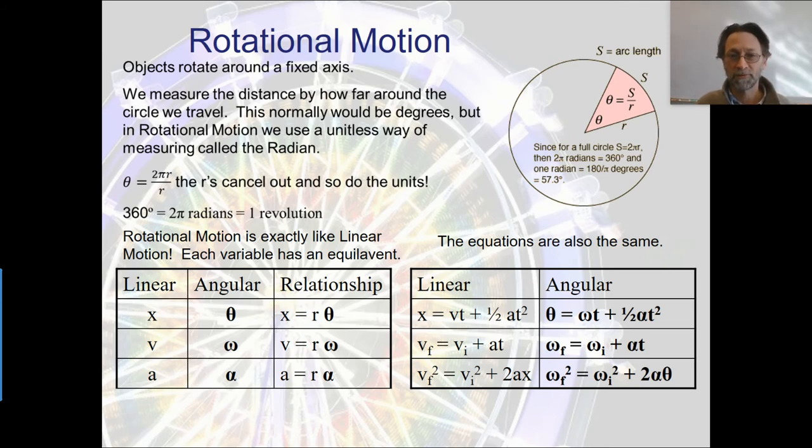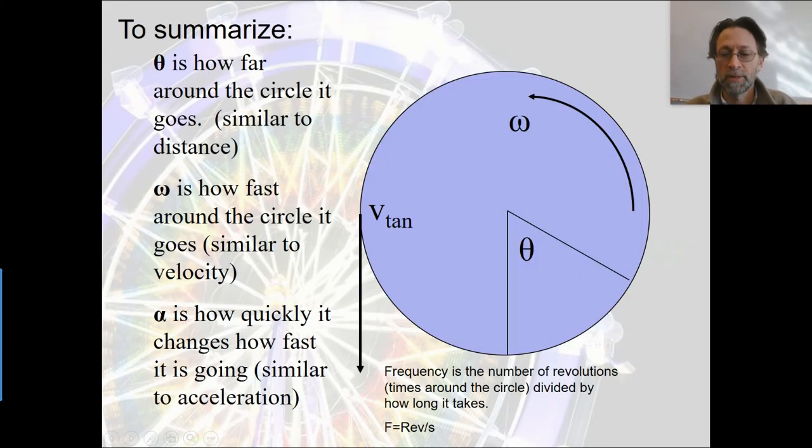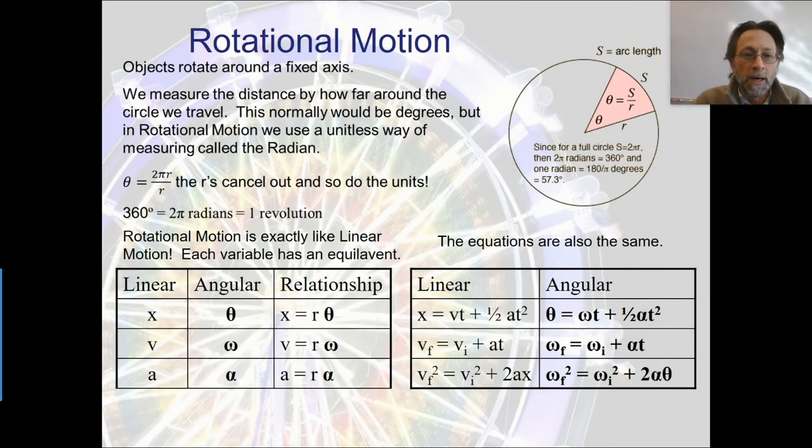Objects rotate around a fixed axis. We're looking at something like this up here in the top right corner where you have the object that is spinning around that circle. When we do that, we would normally measure this in degrees when we're in linear motion, but when we're in angular motion, we're going to measure it with our angle value, and that is going to be in radians.